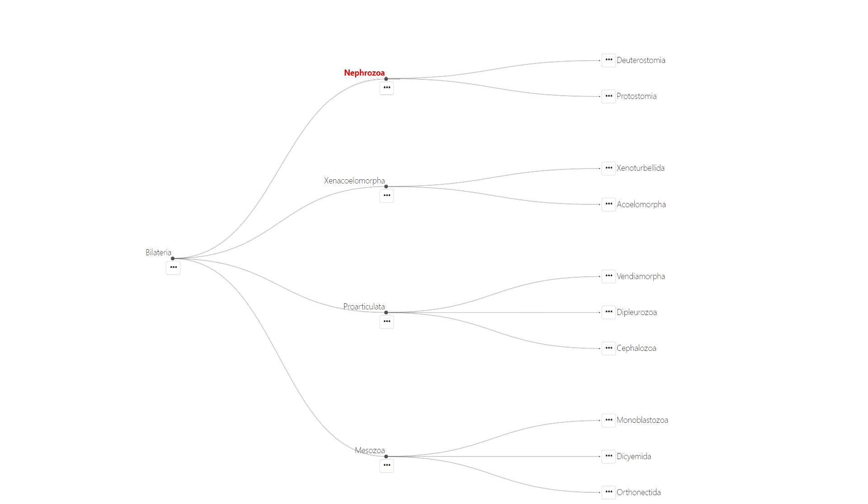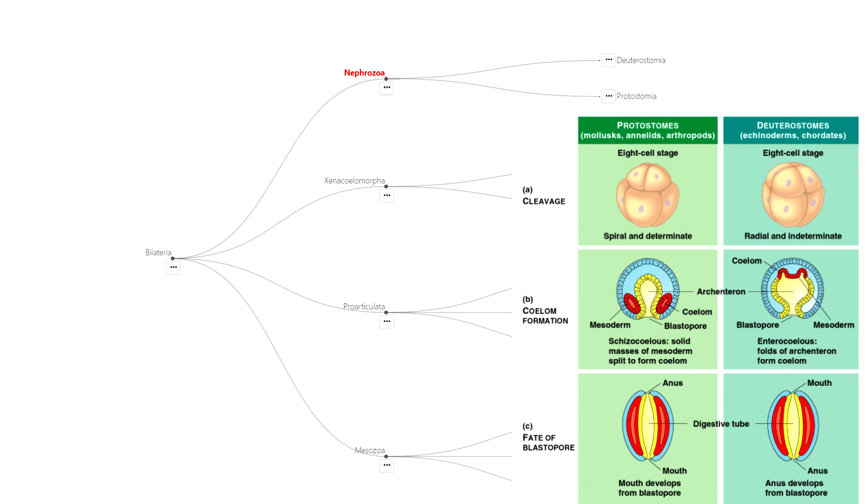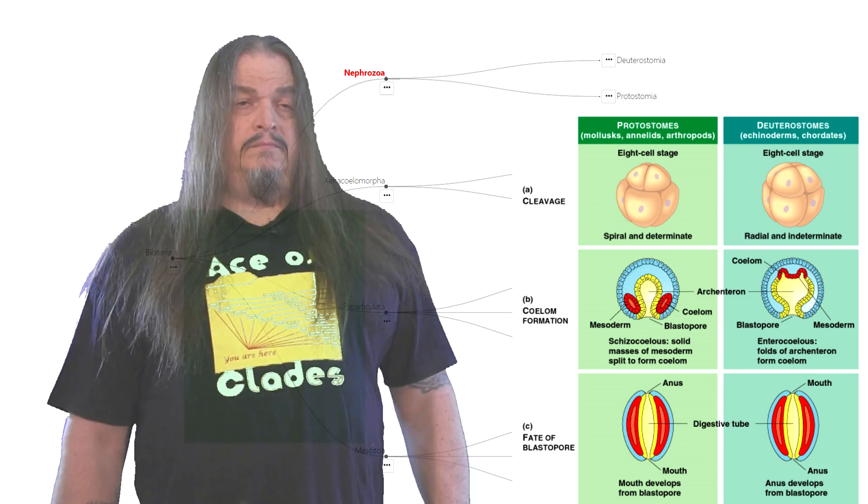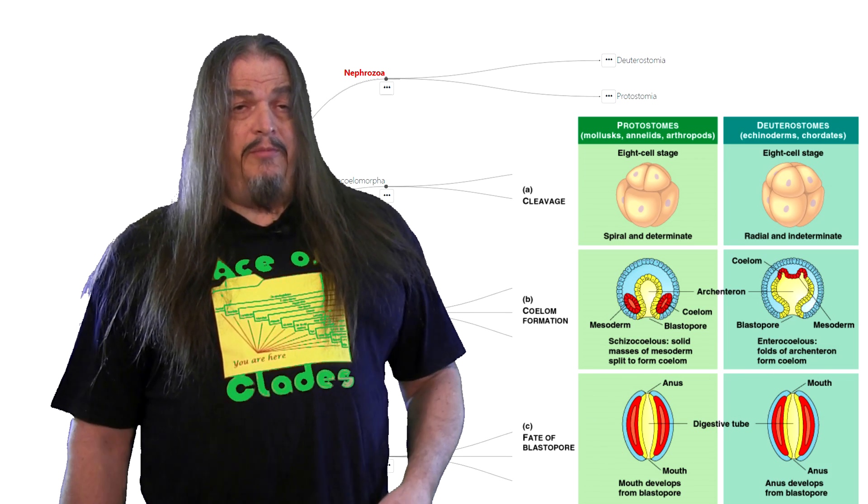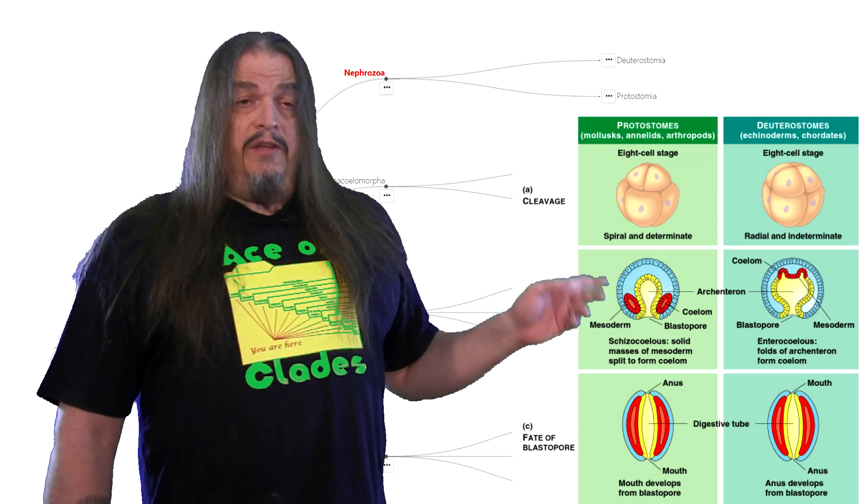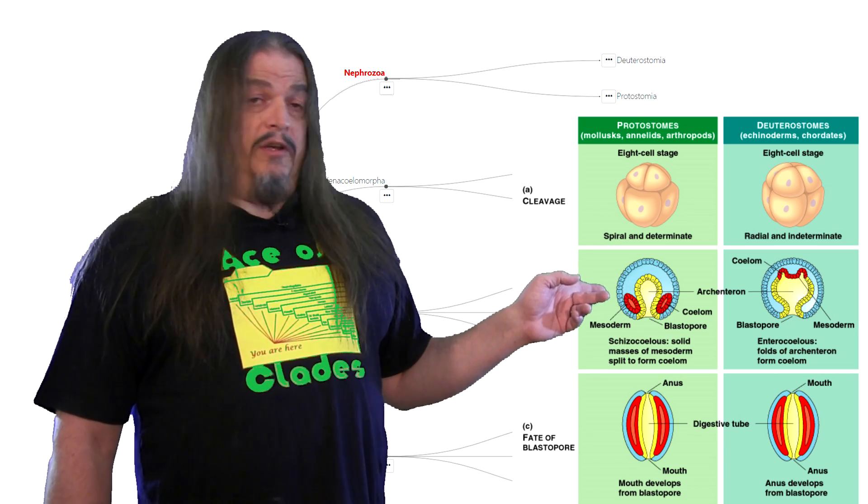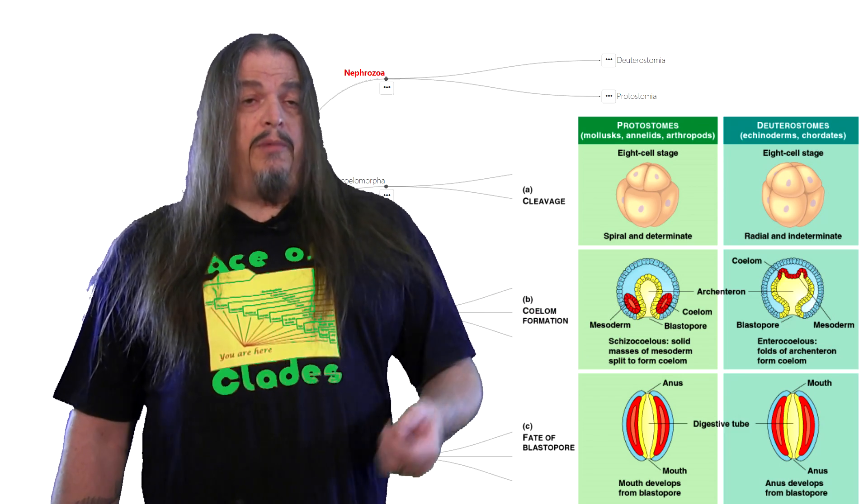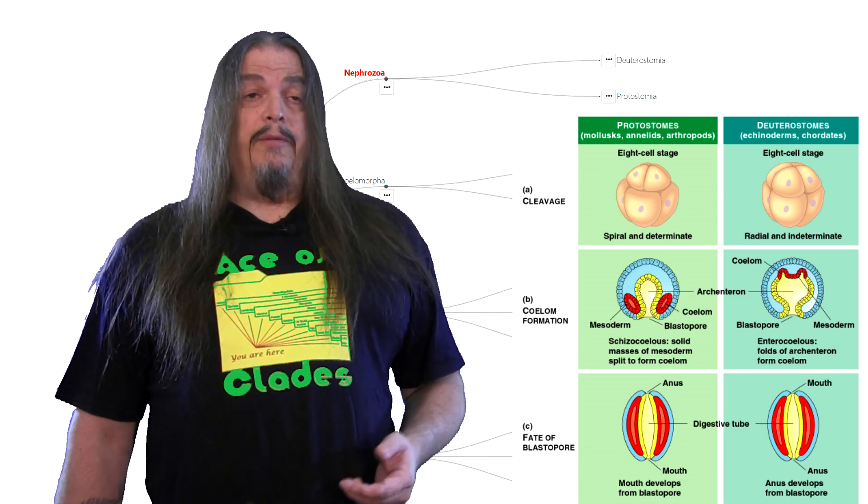Nephrozoa is divided into two groups: protostomes and deuterostomes. The definitive difference is developmental. If all this serious biology is making your eyes glaze over, at least indulge me on this one part. As you can see in the very earliest stages of embryonic development, the first significant feature is this hole or blastopore that opens from one end to the other.